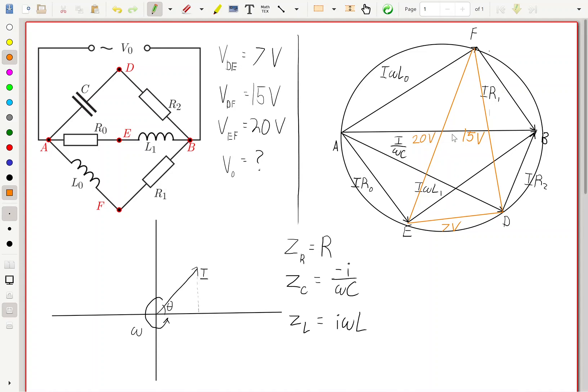We see here that because we drew a phasor diagram, this is effectively just a geometry problem now. We have three sides of a triangle that are given to us inscribed in a circle, and we wish to find the length AB, the potential difference from A to B. So we just need to find the diameter of the circumcircle.